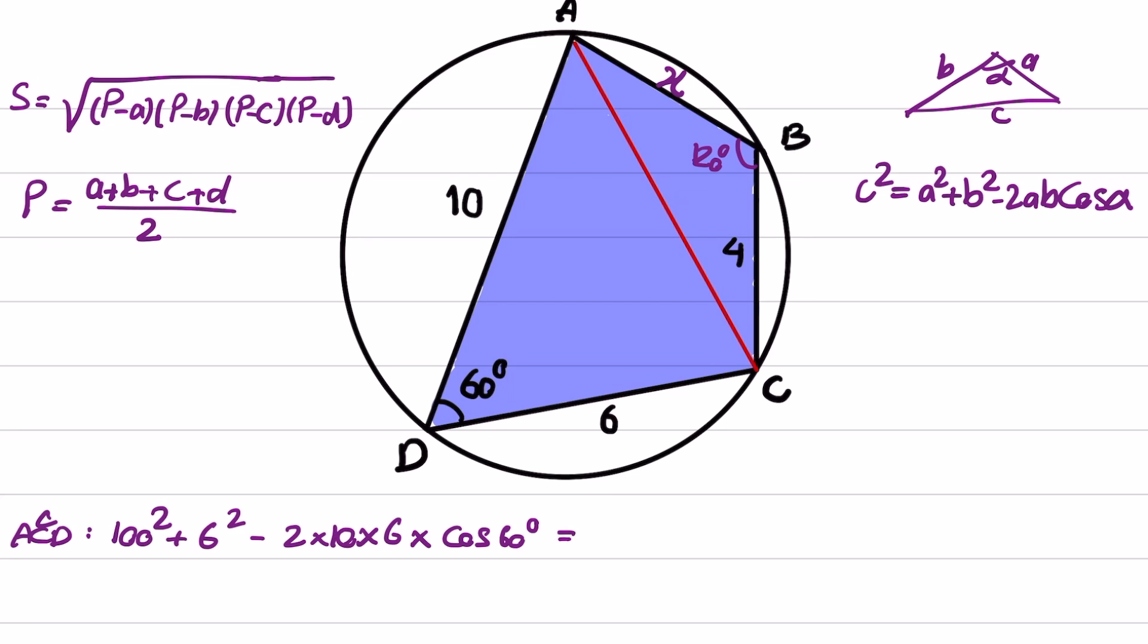Cosine 60 degree is 1 over 2. Therefore, we will have, this is 10, this will be 136 minus, this will go with this because it is 1 over 2, and we will have 60. This one is equal to 76. Now we know that this one is equal to 76.